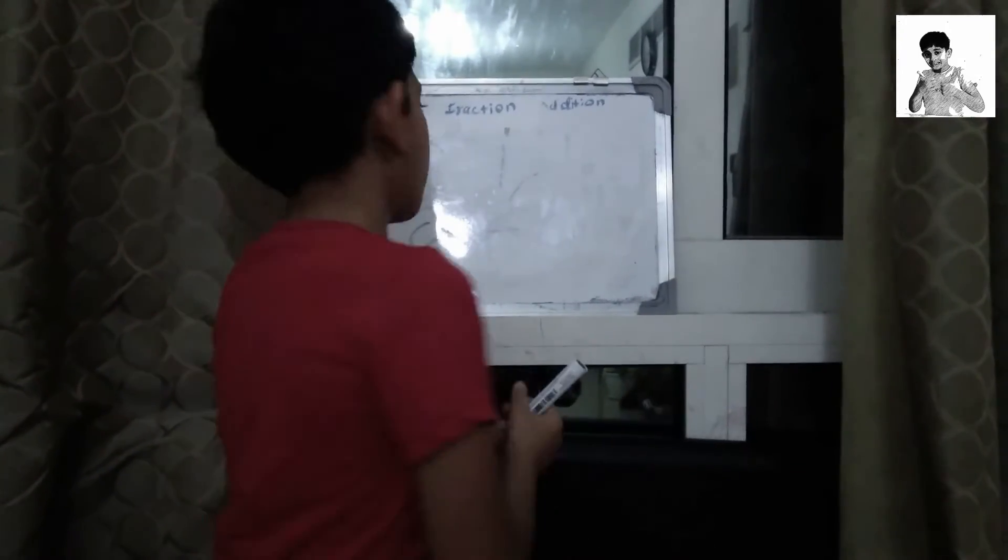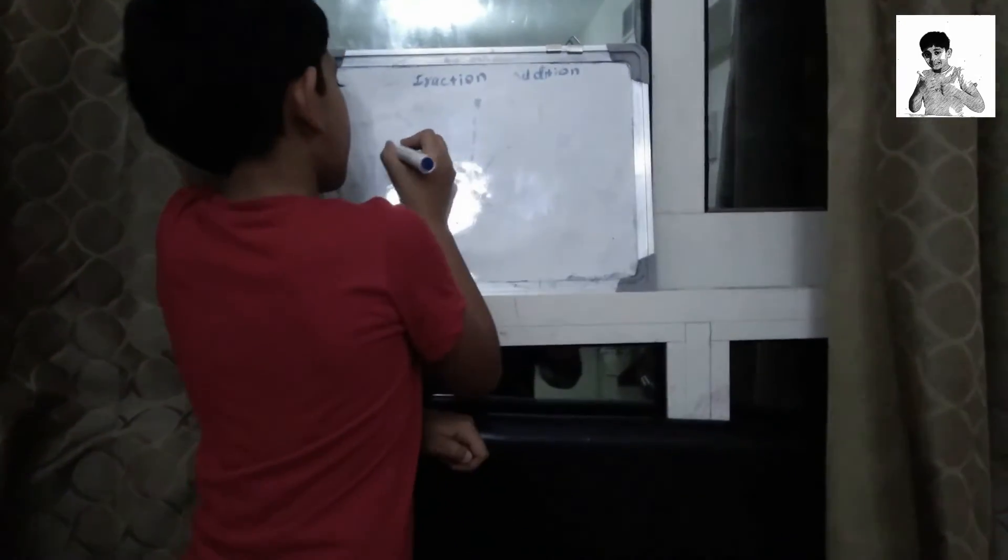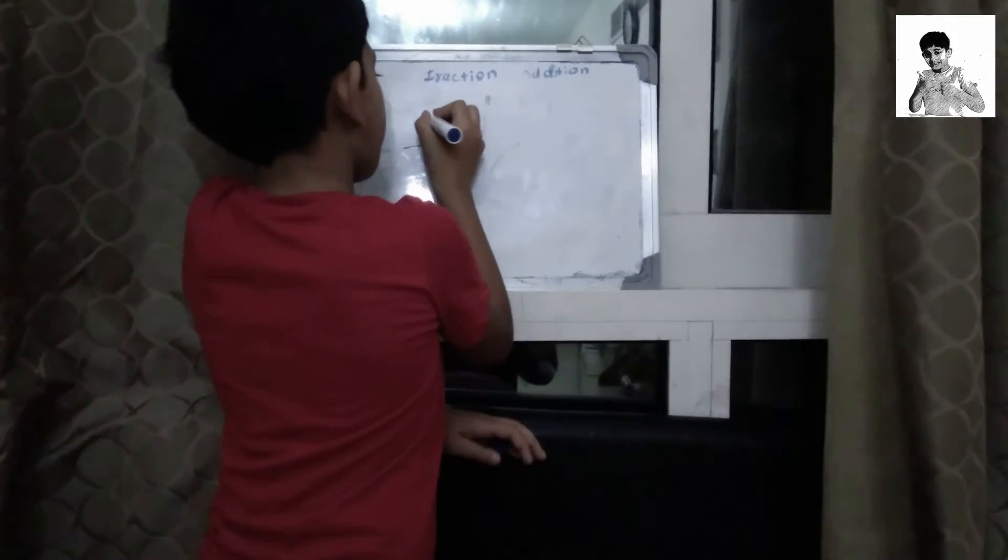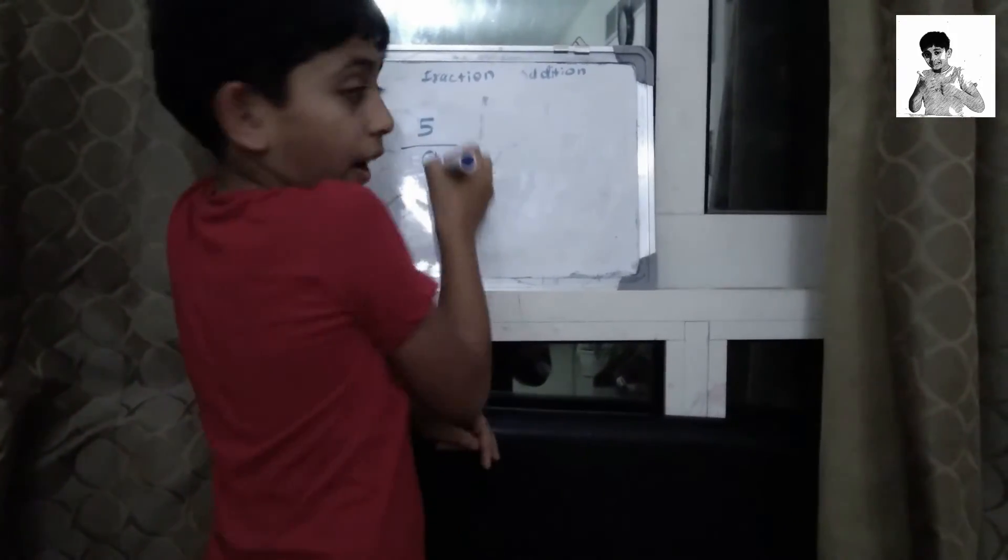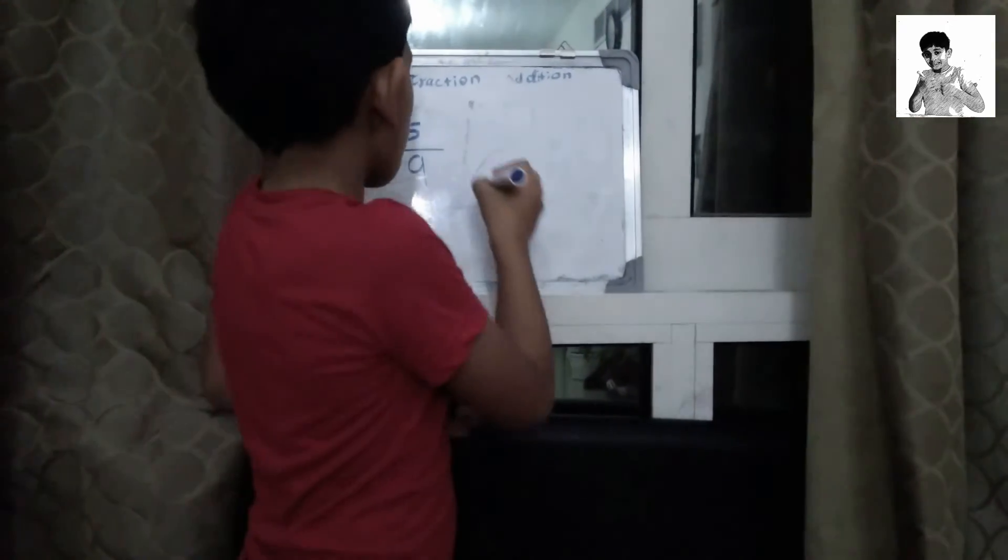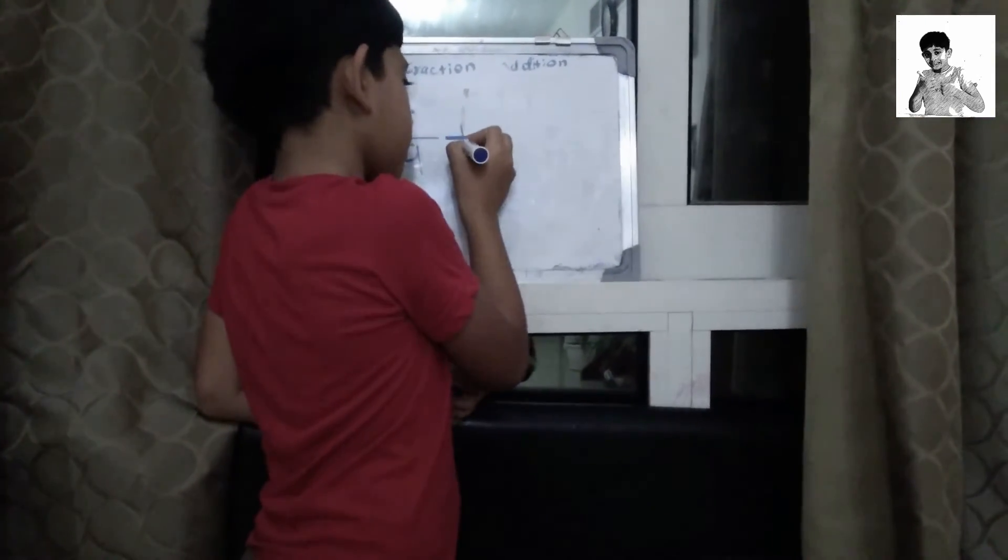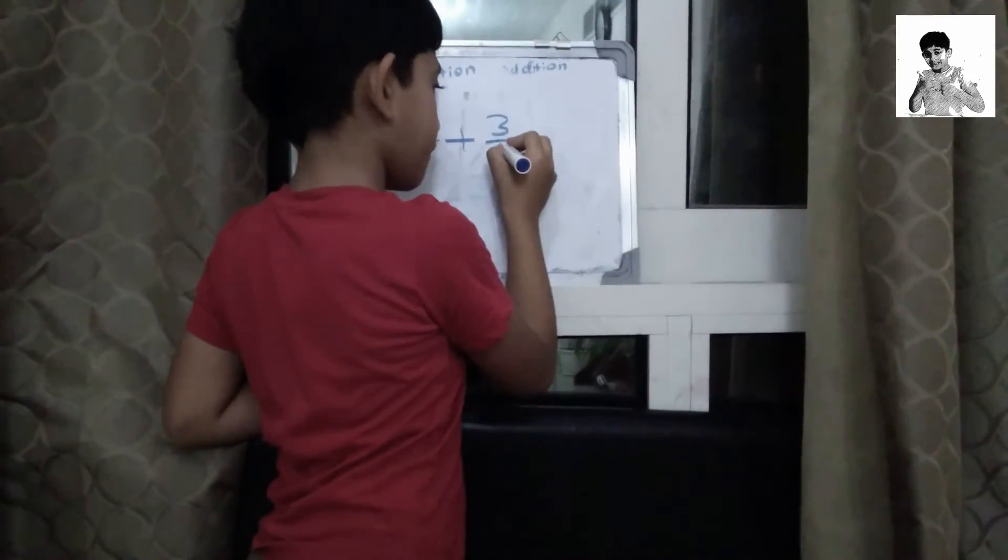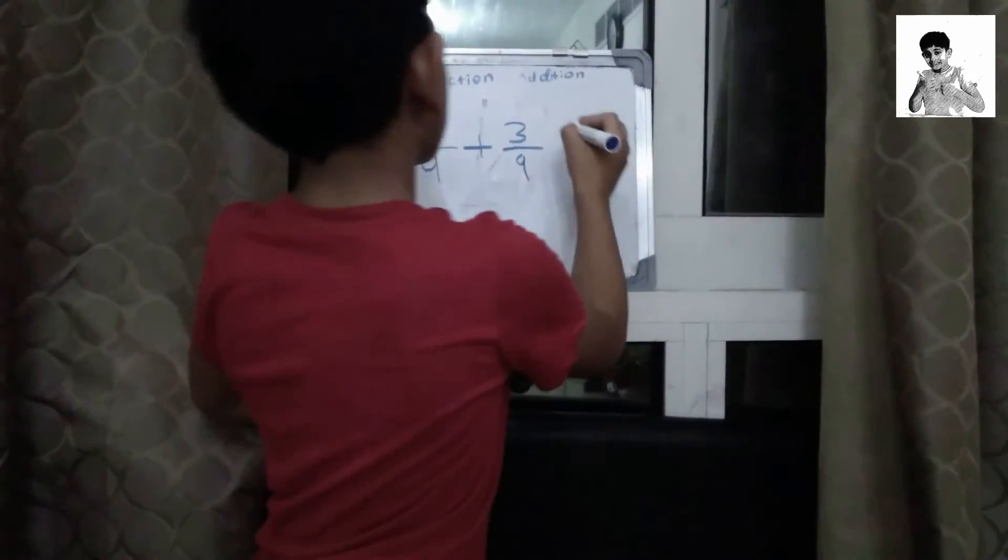I'll take nine here and five, so we have 5/9 plus 3/9, okay?